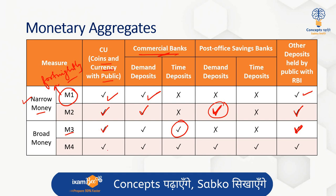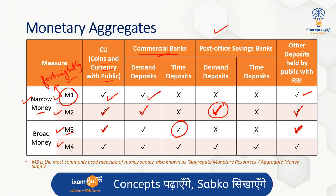M4 is the broadest measure of money supply and includes coins and currency with the public, demand and time deposits with commercial banks, as well as demand and time deposits with post office savings banks, and other deposits held by the public with the RBI. M3 is the most commonly used measure of money supply, also known as aggregate monetary resources or aggregate money supply. Currently, narrow money M1 and broad money M3 are the most relevant indicators of money supply in India.